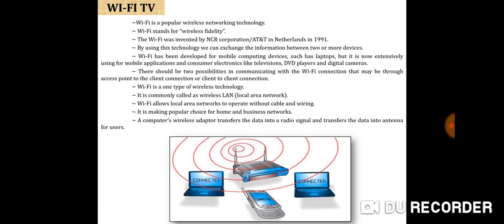Wi-Fi has been developed for mobile computing devices such as laptops, but it is now extensively used for mobile applications and consumer electronics like televisions, DVD players, and digital cameras. There are two possibilities in communicating with a Wi-Fi connection: through an access point-to-client connection or a client-to-client connection. Wi-Fi is one type of wireless technology, commonly known as wireless LAN. Wi-Fi allows local area networks to operate without cables and wiring, making it a popular choice for home and business networks. A computer's wireless adapter transfers data into a radio signal and transmits it through an antenna.